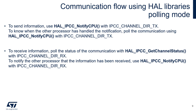Communication flow using HAL libraries in polling mode: to send information, use HAL_IPCC_NotifyCPU with the IPCC_CHANNEL_DIR_TX argument. To know when the other processor has handled the notification, poll the communication using HAL_IPCC_NotifyCPU with the IPCC_CHANNEL_DIR_TX argument. To notify the other processor that the information has been received, use HAL_IPCC_NotifyCPU with the same argument.